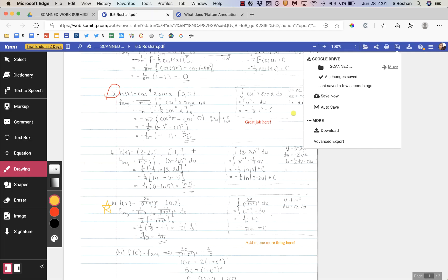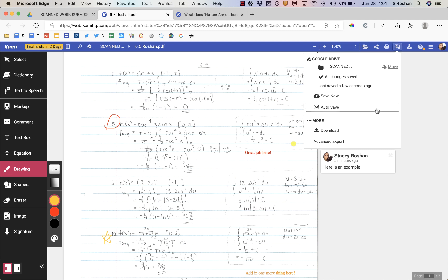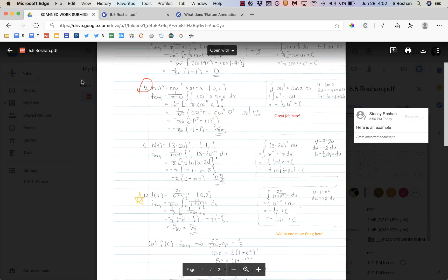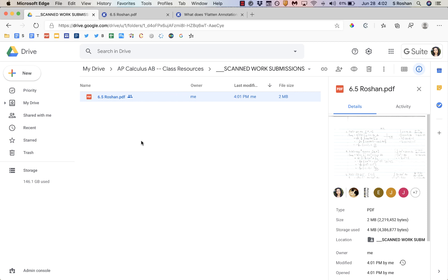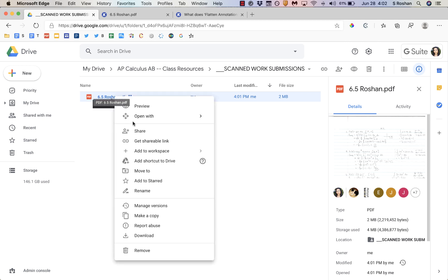So that is pretty much how I annotate my student work. I have students submit their work to a shared folder. They use a scanning app and then they upload as a PDF. That's very important that they upload it as a PDF. Then I right-click on the file, open with, annotate with Kami.